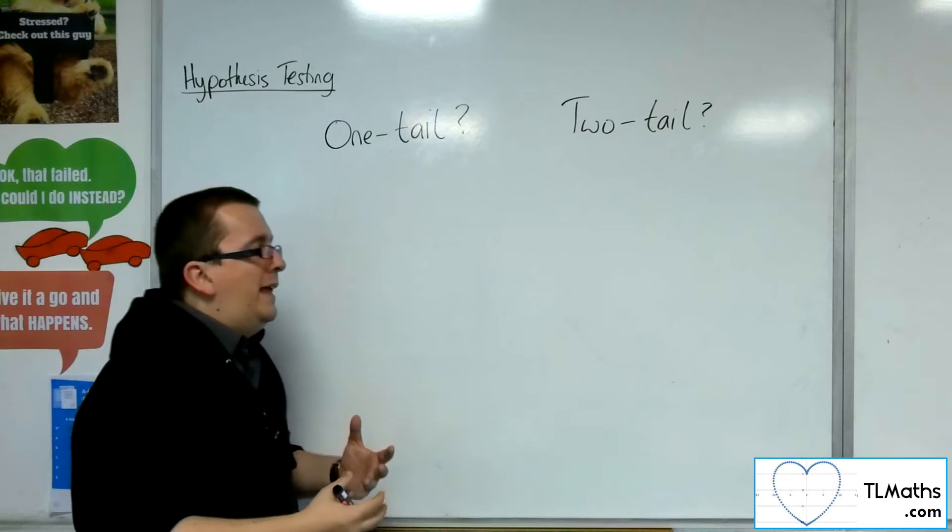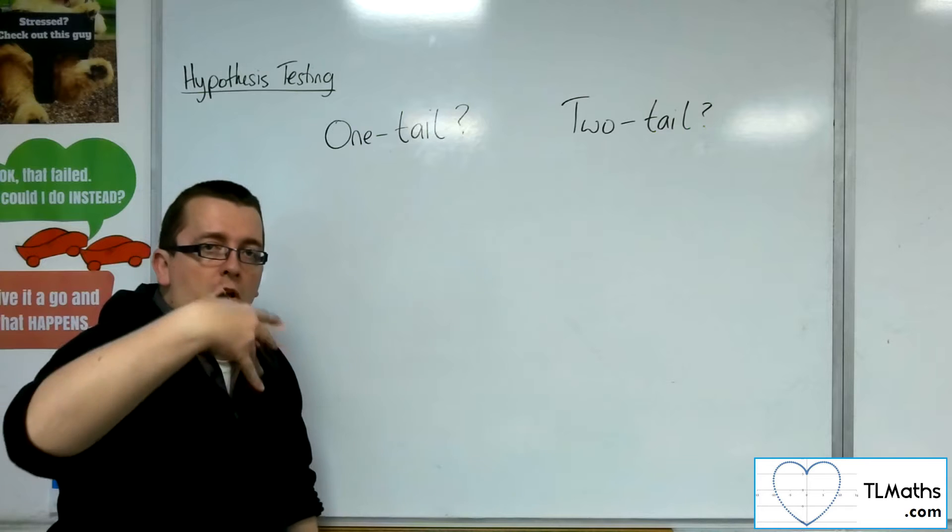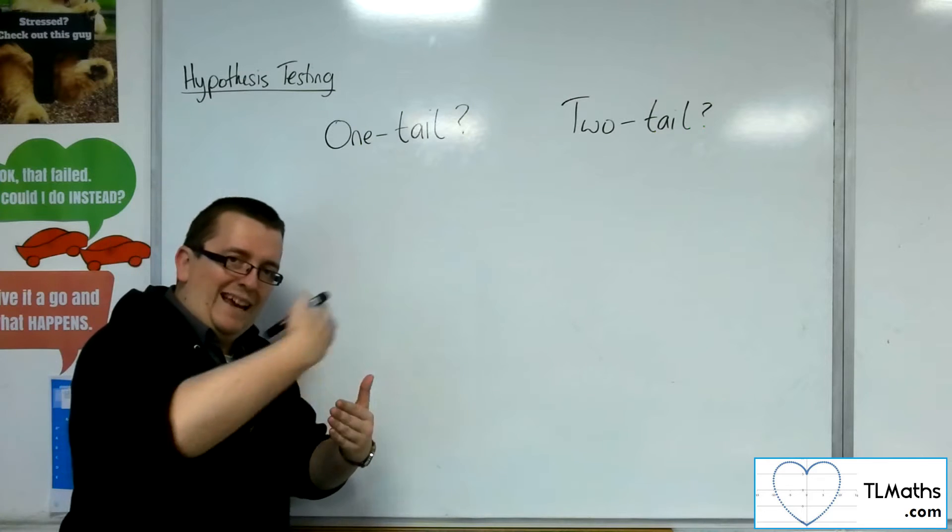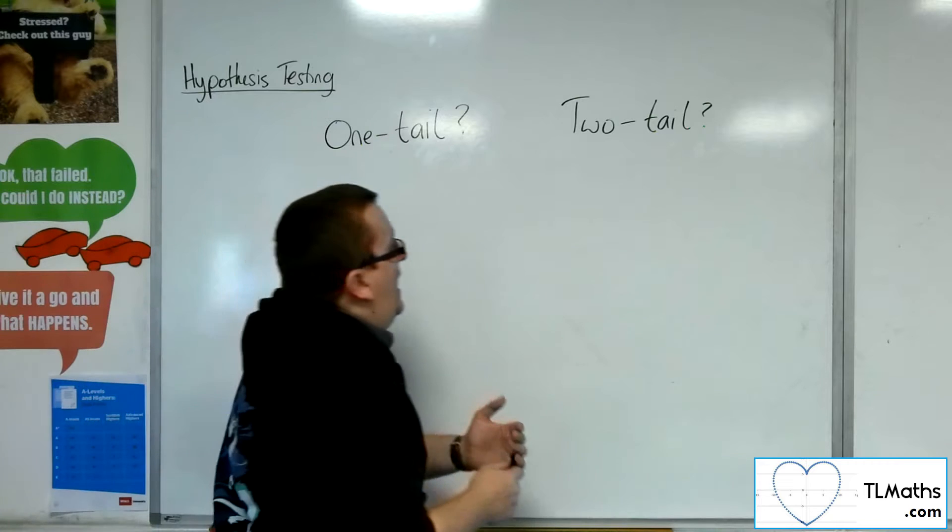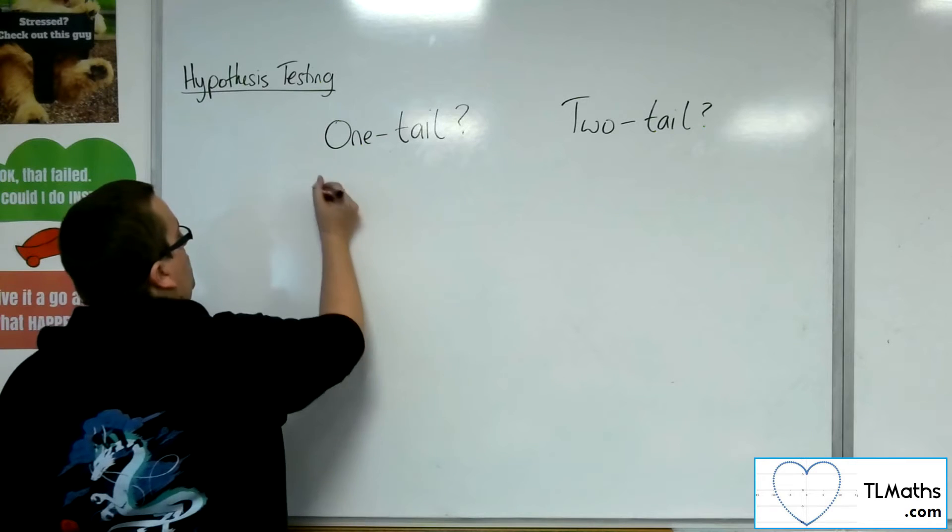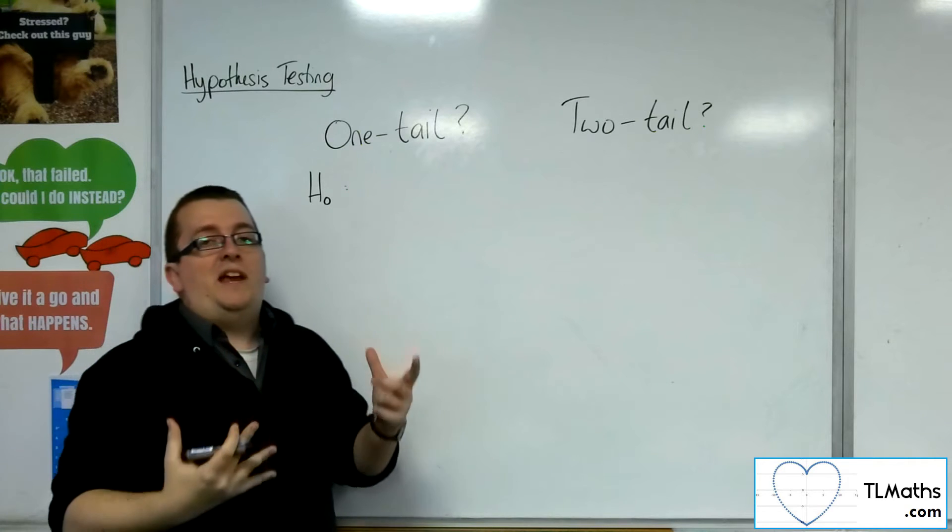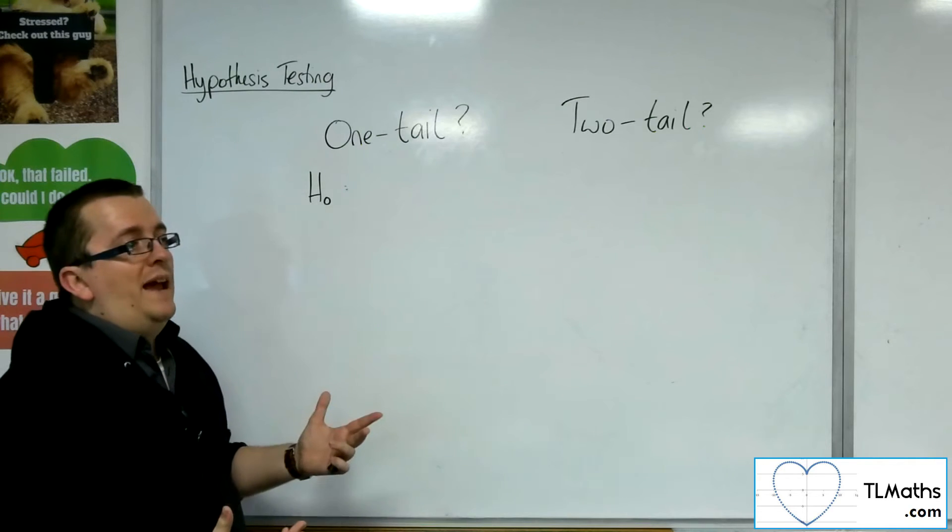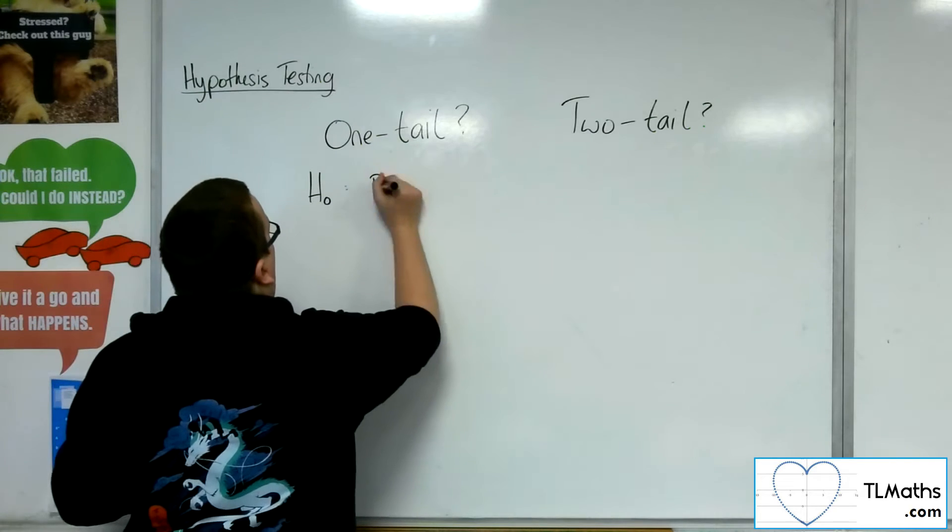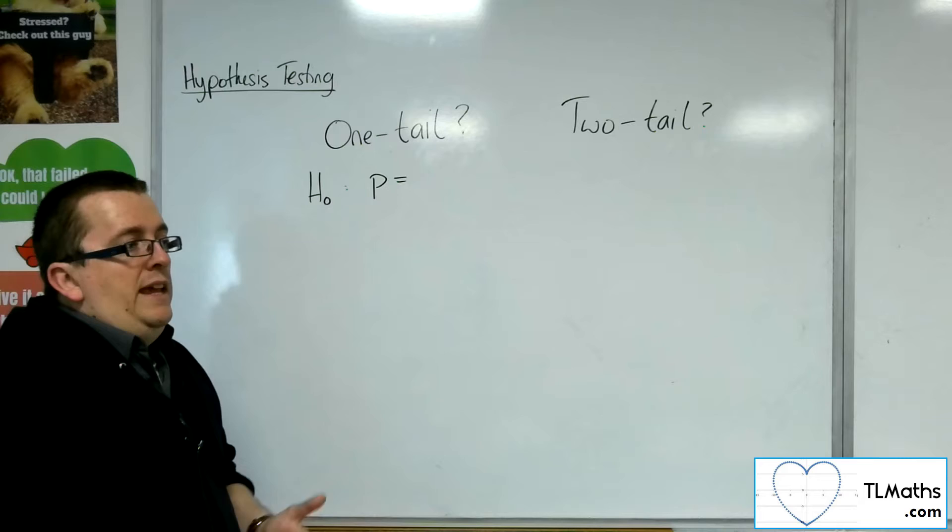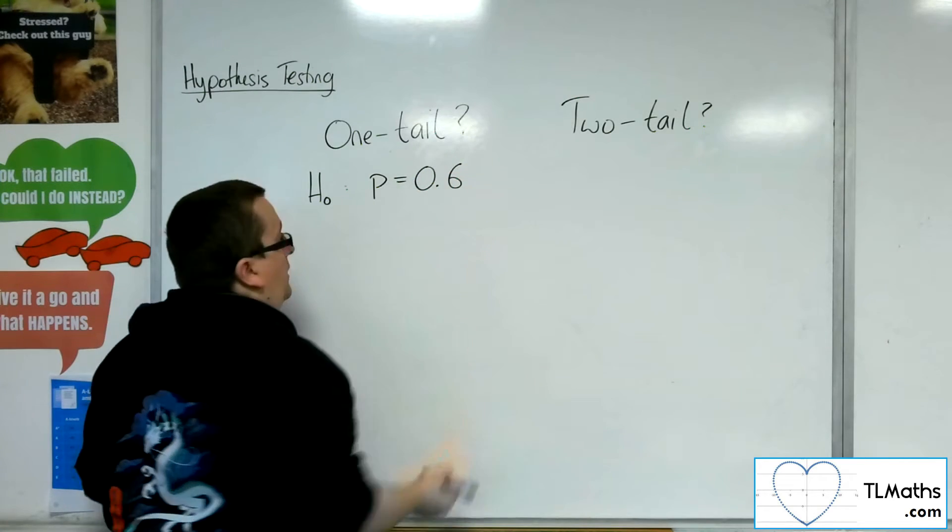So if we were looking at a binomial hypothesis test, which we will look at in more detail in the next section along, then what we have is a situation where we say, H0, the null hypothesis, would state that the probability of event happening is as we think it is. So it might be that historically we found that the probability of something happening is 0.6.